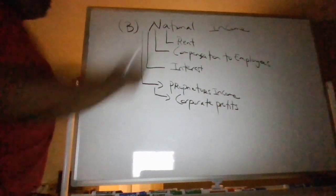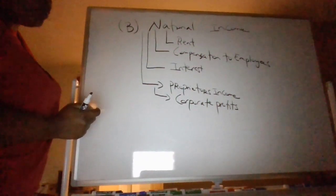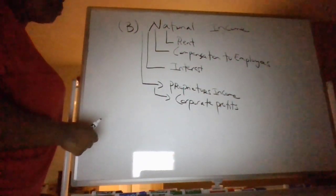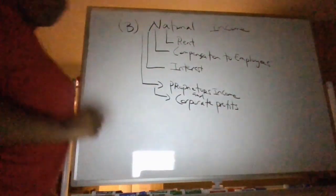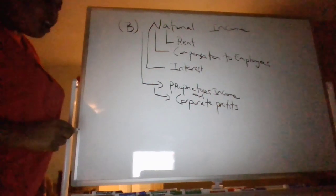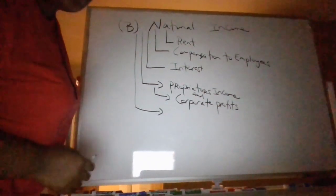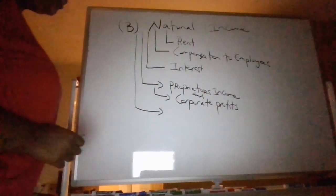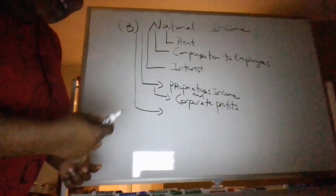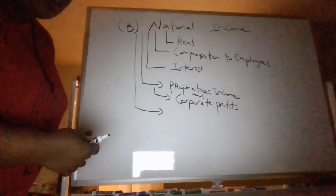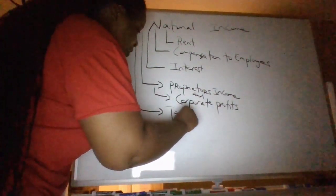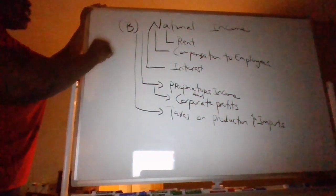So where are you getting money from? Rent, compensation to employees (wages), interest, proprietor's income, and corporate profits — both of these make up the profits line. Income also flows to another entity: it flows to the government. Where does the government get income from? Income, in terms of a productive flow in society from the government, is in the form of taxes — and we're very specific on production taxes. Put all of these together and you have national income.